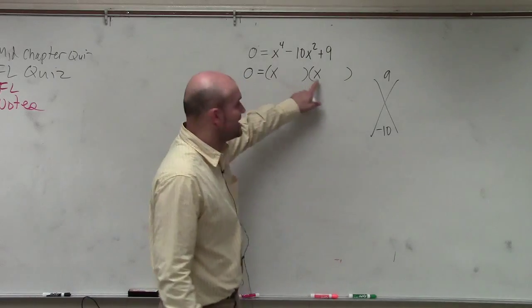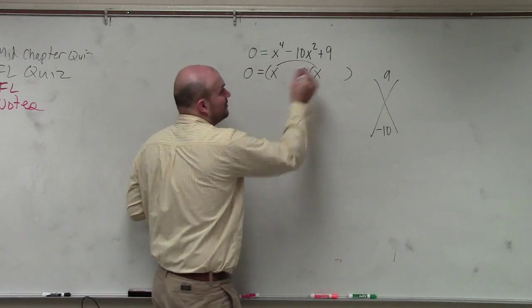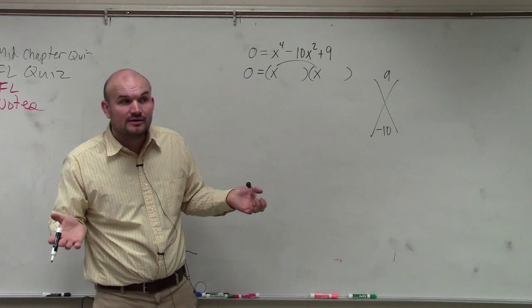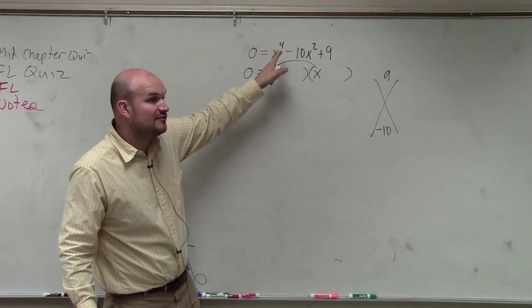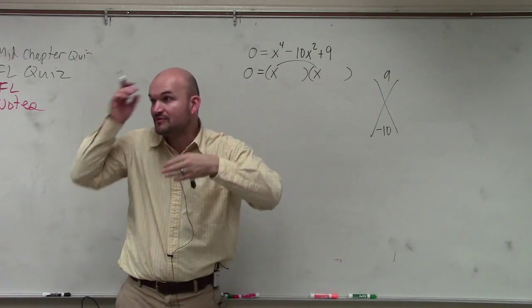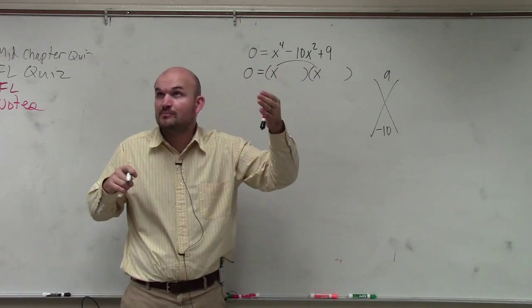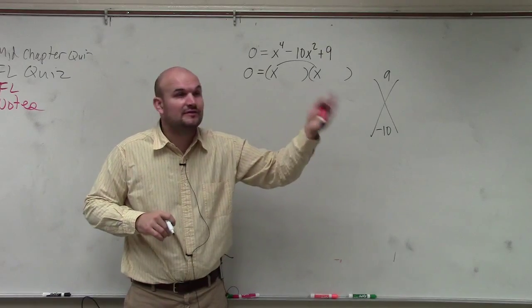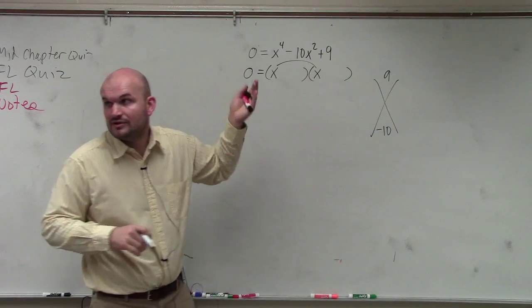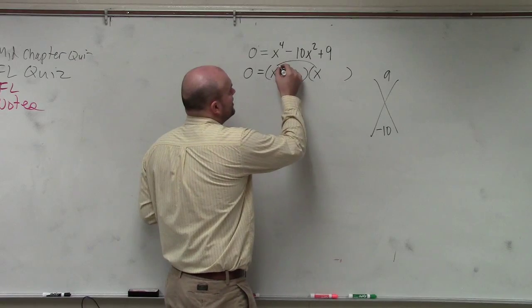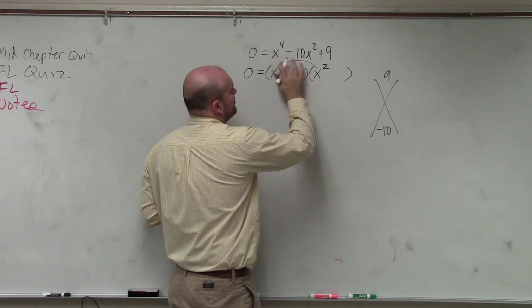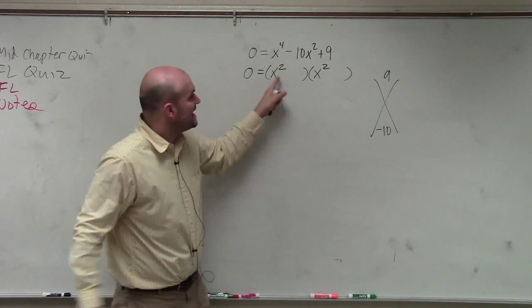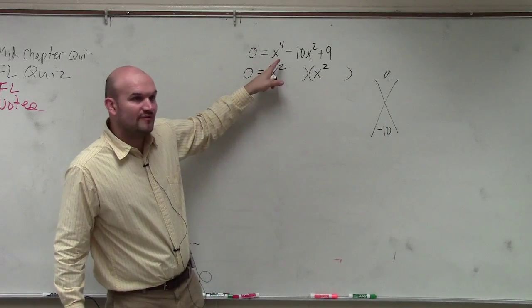However, the problem with this is x times x gives you x squared. When you do FOIL, x times x gives you x squared, right? We need to get it to x to the fourth. So for the rest of the problems for number 9, 11, 13, 15, and whatever else you guys had up there, you've got to put it to the power. You've got to put it to squared. Because x squared times x squared gives you x to the fourth.